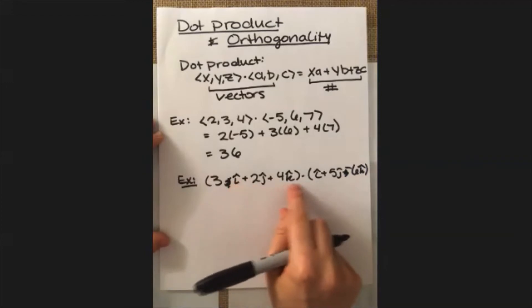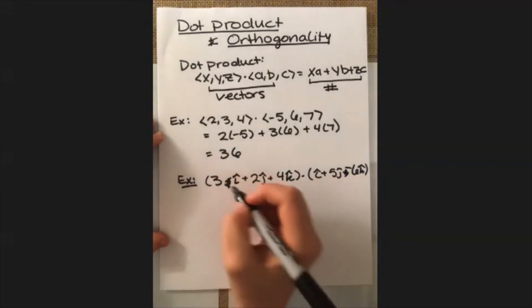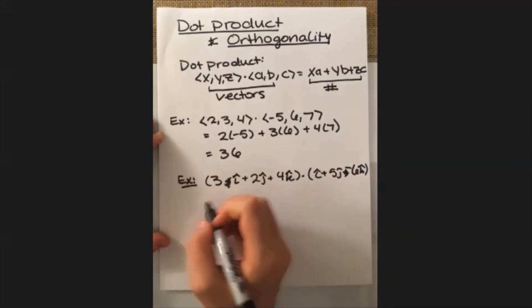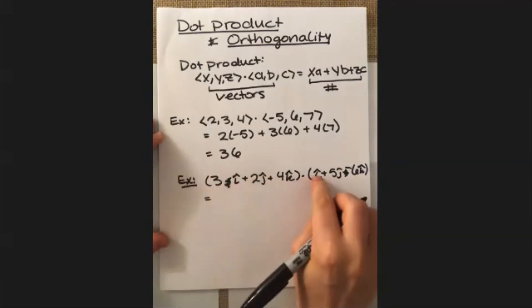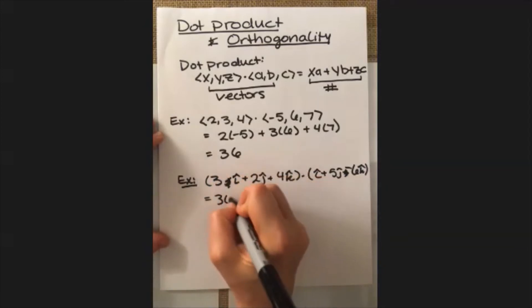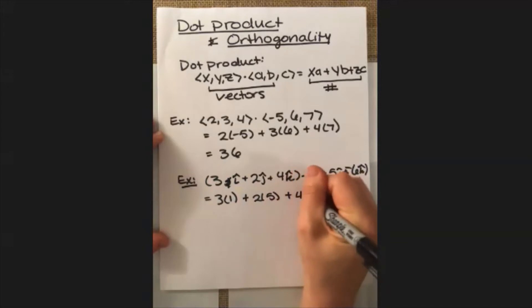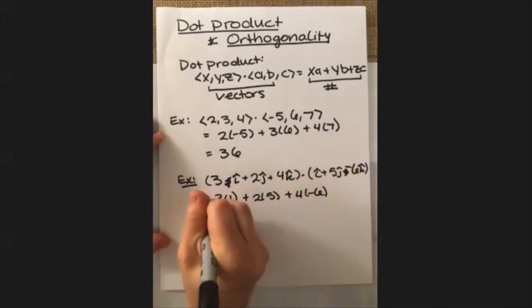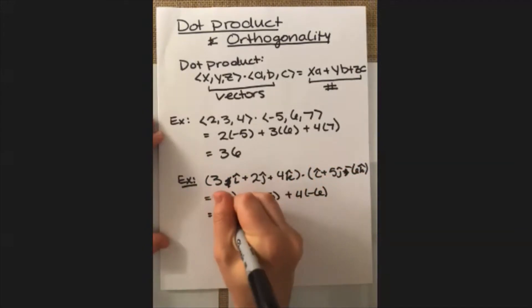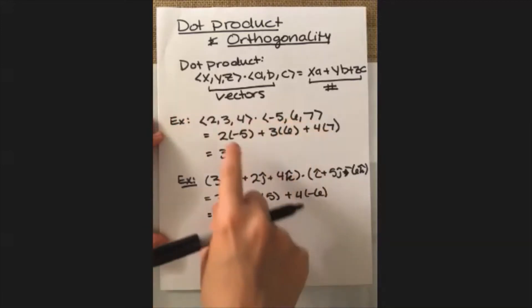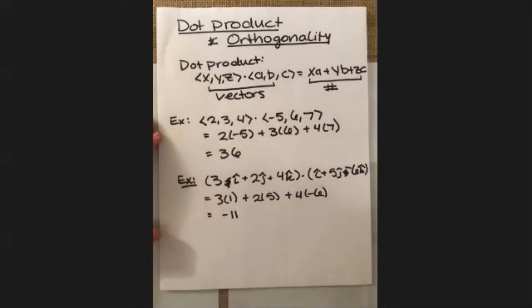And in this instance, recall that each one of these denotes a different component, so we just match the components up and then add them together, or the coefficients on the components, that is. So in this case, we'll just take the 3 from the first i, and then since there's no coefficient here, that means that there's just a 1, and then we add to it the 2 times the 5, and then add to that the 4 times the -6. And then what you get is -11. So in both cases here, we started with two vectors, and then what we get at the end is a number.